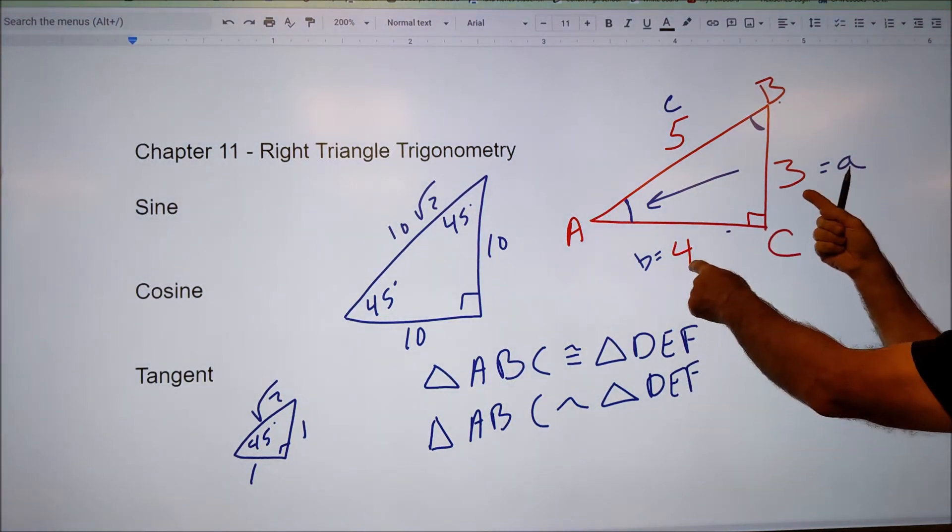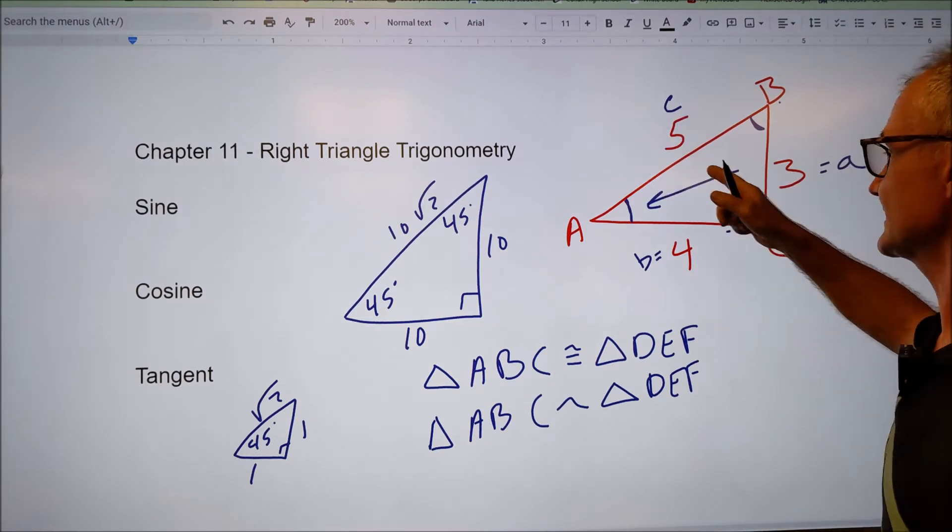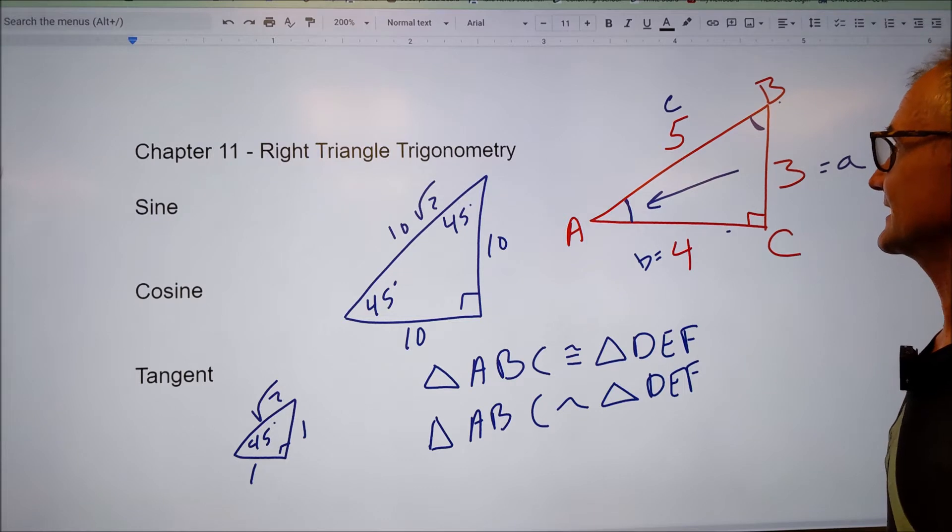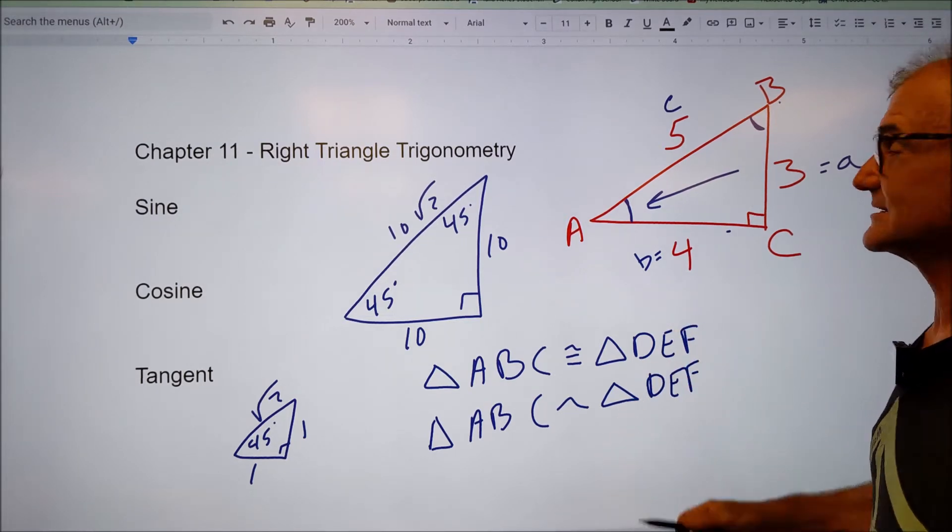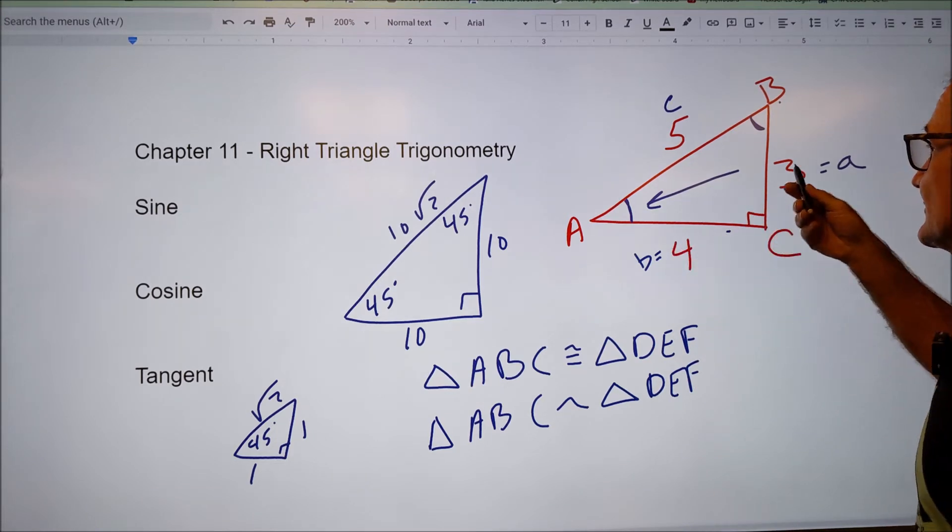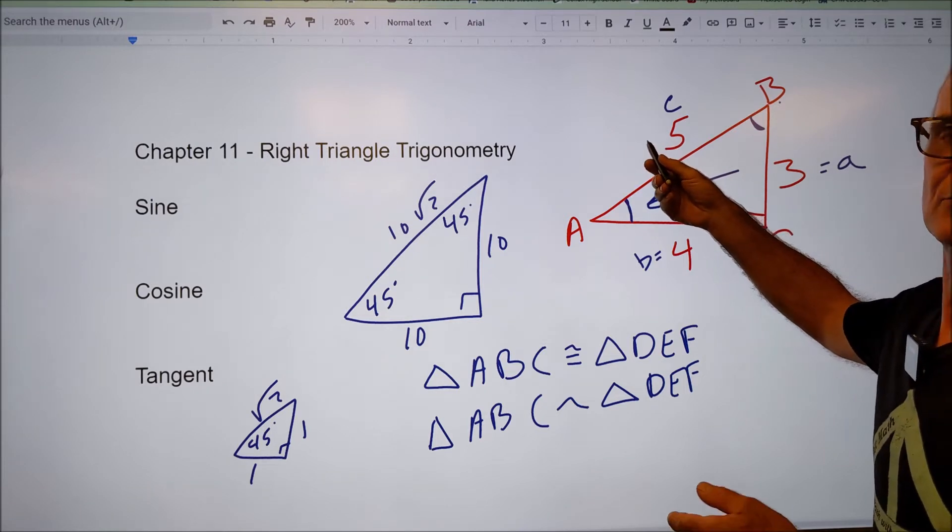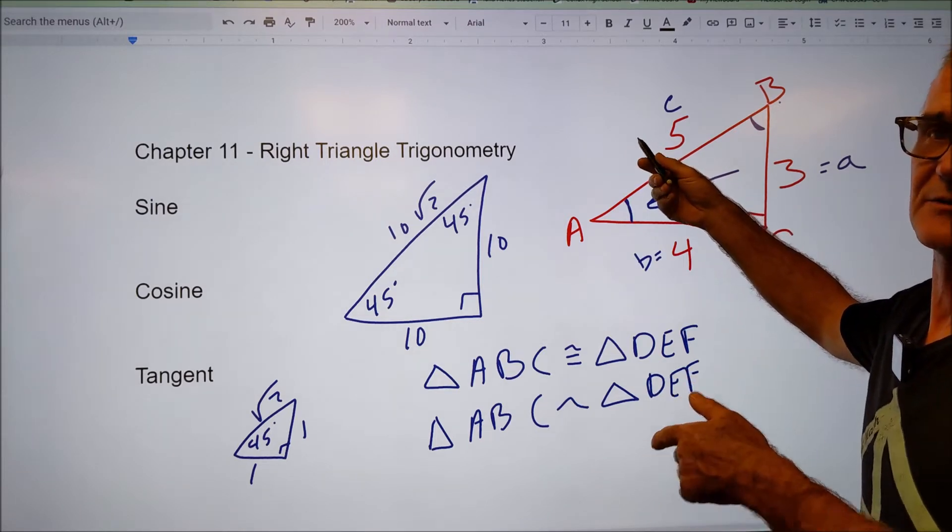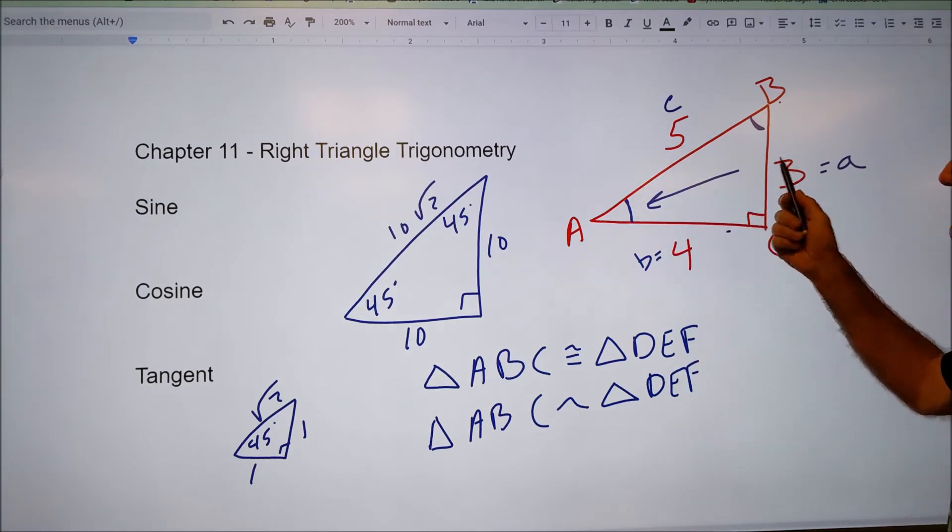In a right triangle, I have two legs and a hypotenuse. That hypotenuse is always the longest side, and it is always opposite the right angle. I could use the Pythagorean theorem if I have any of the two sides. To find the hypotenuse, I could say 4 squared, 16, plus 3 squared, 9, should be equal to whatever this is. Square root of 16 plus 9, square root of 25, is 5. So I could use Pythagorean theorem.